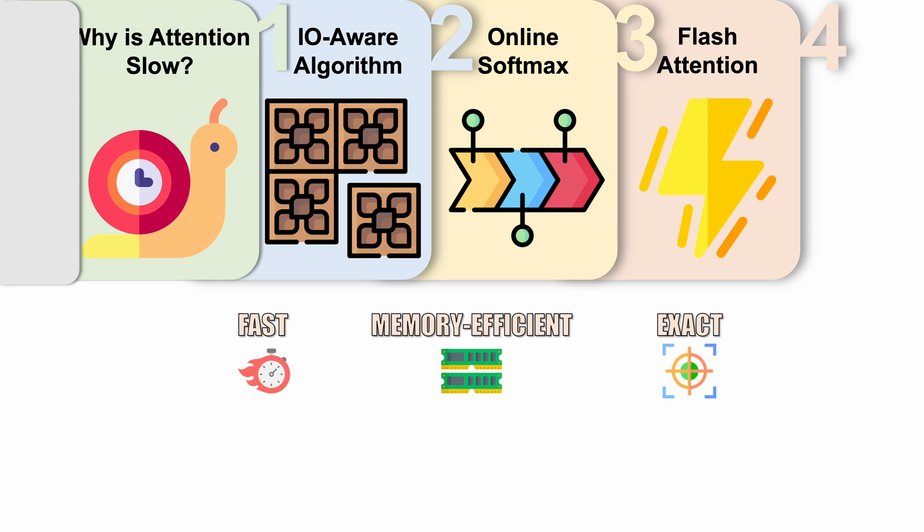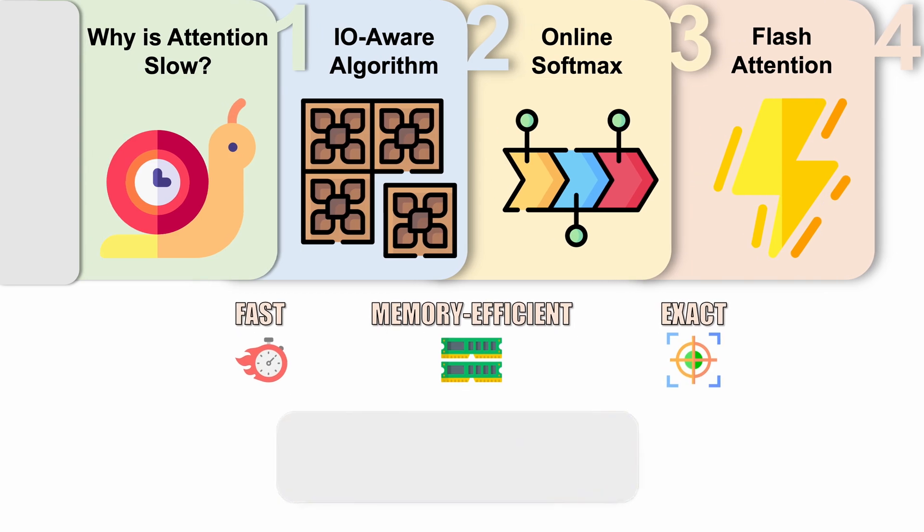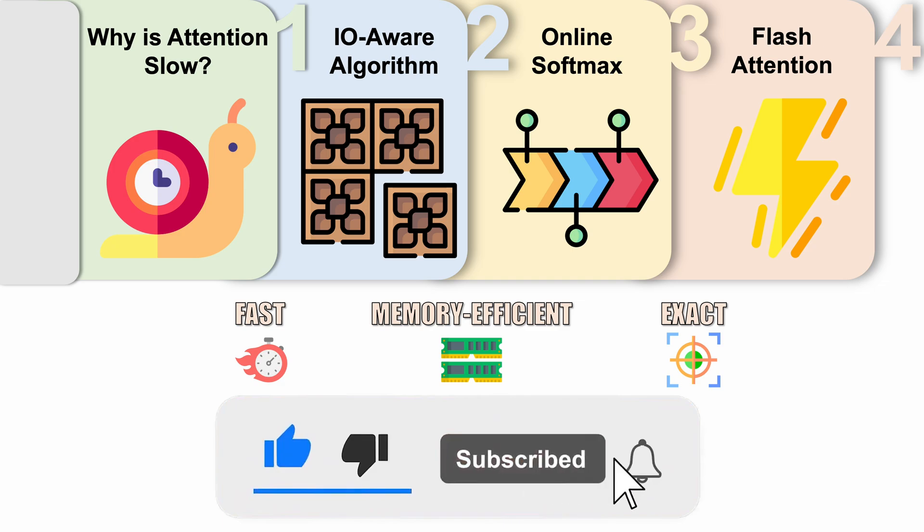In summary, we covered why attention is slow, how an IO-aware algorithm like tiling can speed things up, online softmax and its extension to flash attention. Thanks for watching, and I will see you next time.